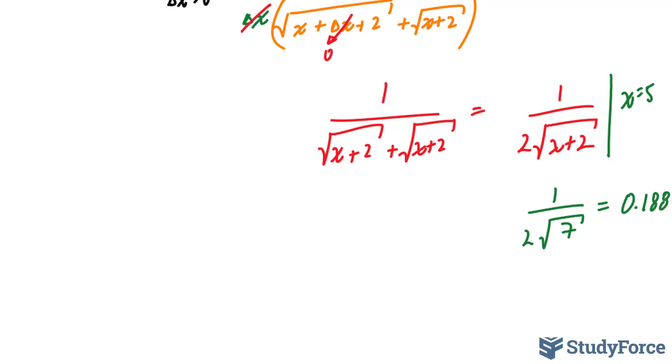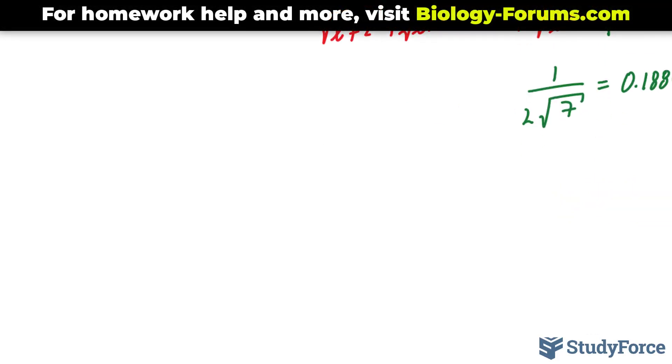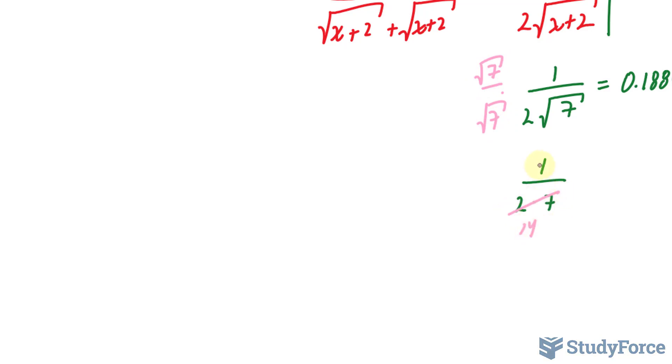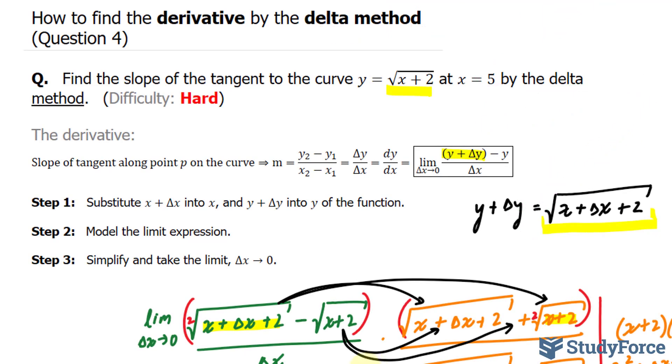If your teacher does not want the decimal version and wants the rationalized version, you should write down 1 over 2 square root of 7. And to rationalize the denominator, we multiply the top and the bottom by the square root of 7. This becomes 14. And at the top, we have the square root of 7. And so there you have it. That is how to find the derivative by the delta method.